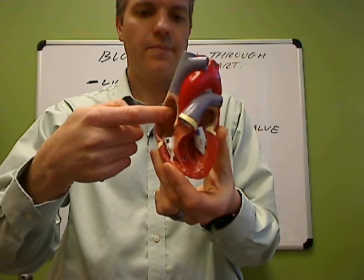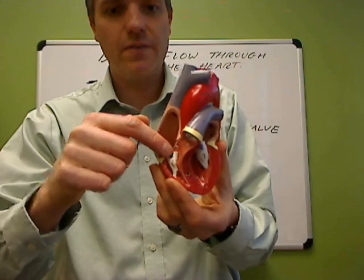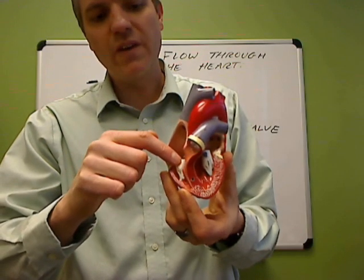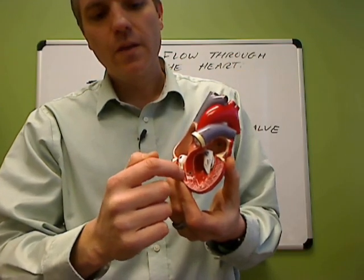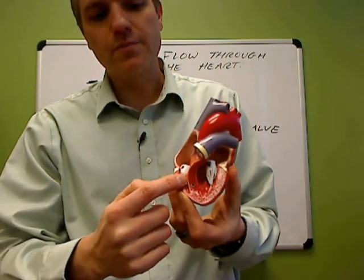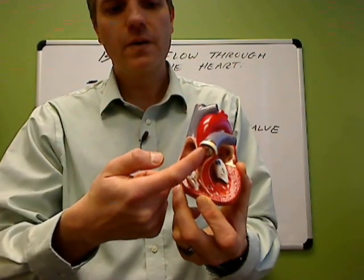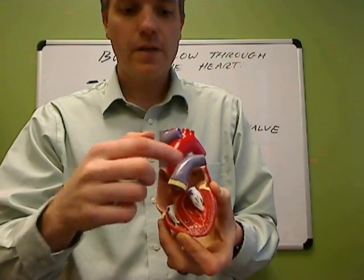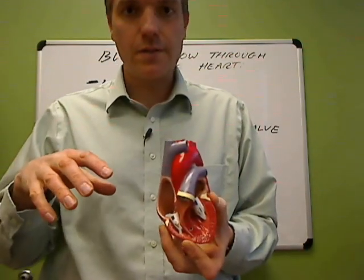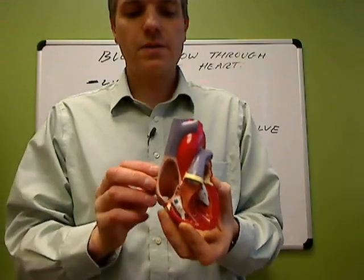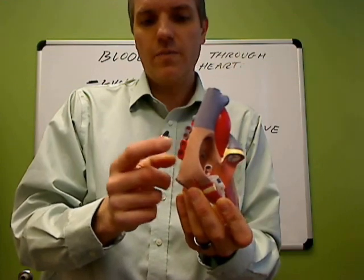On the heart model, this is the right atrium. Then the blood passes through this valve — the right atrioventricular valve, sometimes called the tricuspid valve — and enters the right ventricle. The right ventricle contracts and pushes the blood up through the pulmonary semilunar valve into the pulmonary trunk, which branches into pulmonary arteries, and the blood goes into the lungs.